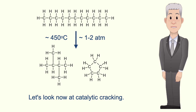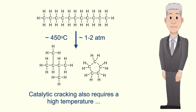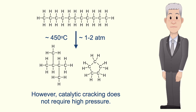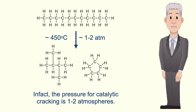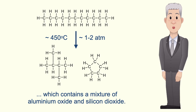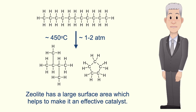Catalytic cracking also requires a high temperature, in this case around 450 degrees Celsius. However, catalytic cracking does not require high pressure — the pressure for catalytic cracking is 1 to 2 atmospheres. Catalytic cracking uses a zeolite catalyst which contains a mixture of aluminium oxide and silicon dioxide. Zeolite has a large surface area which helps to make it an effective catalyst.